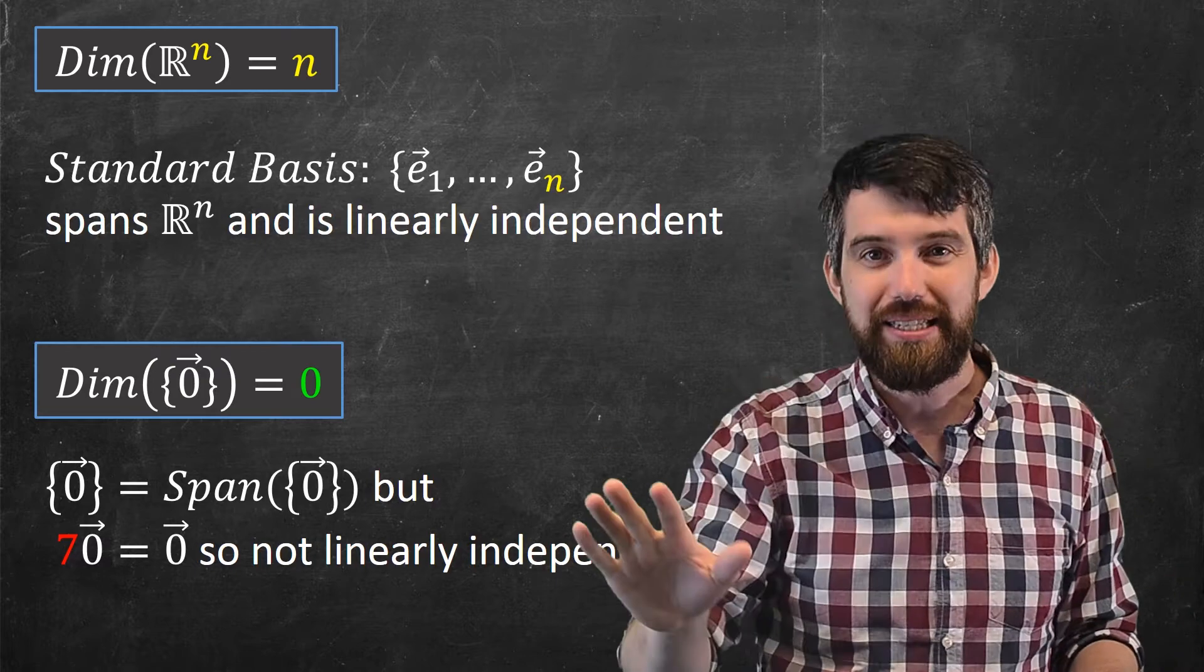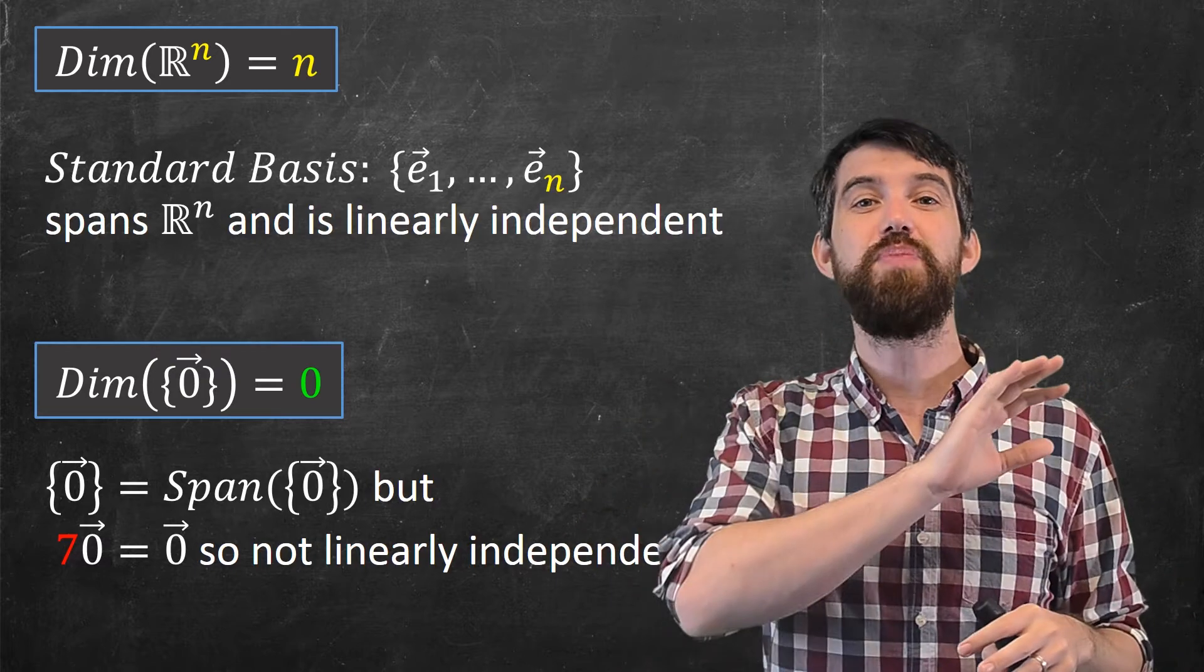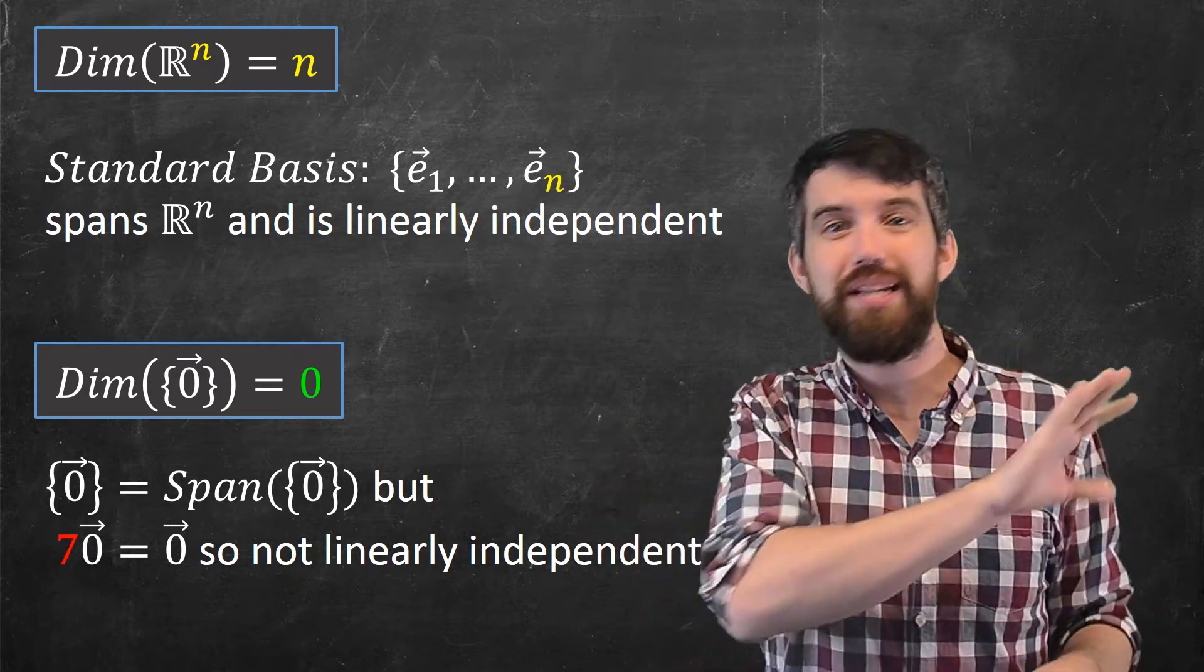However, the set that's just the zero vector is not a basis. And the reason is it fails to be linearly independent. It spans it, but it's not linearly independent.